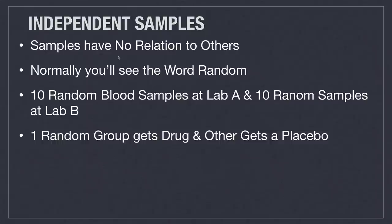Independent samples are those in which samples from one population have absolutely no relation to another group. Normally when looking at them, you're going to see the word random many times, versus the cause and effect terms seen with dependent samples. An example: blood samples taken from two random people tested at lab A, and then 10 more random samples from lab B. Another example: giving one random group a drug and another random group a placebo and testing the results — both are completely independent from each other.